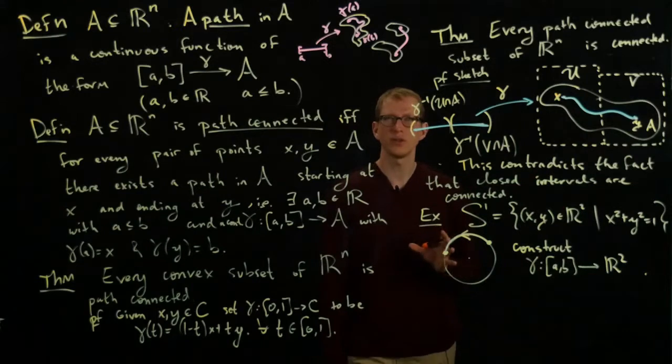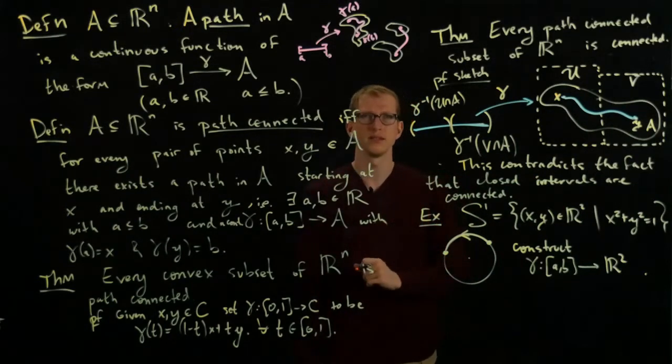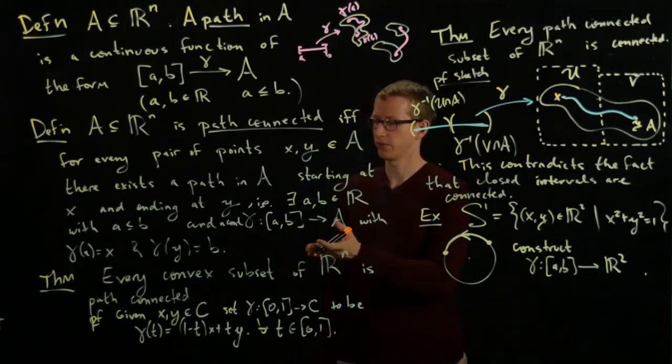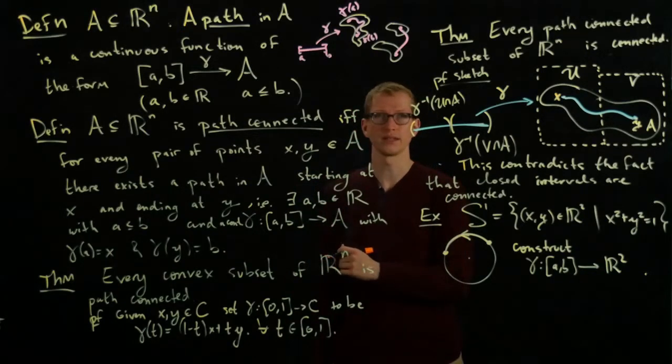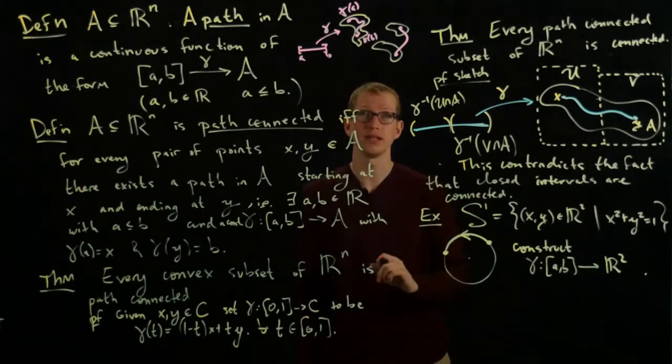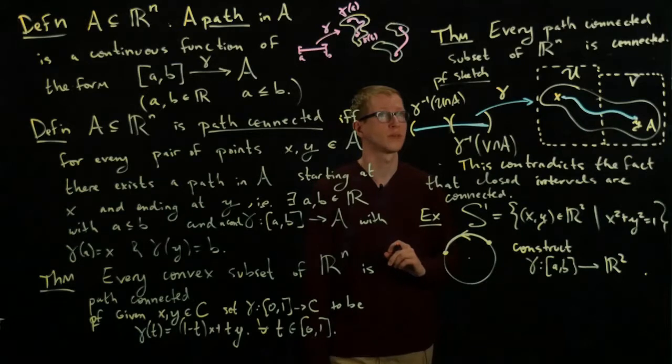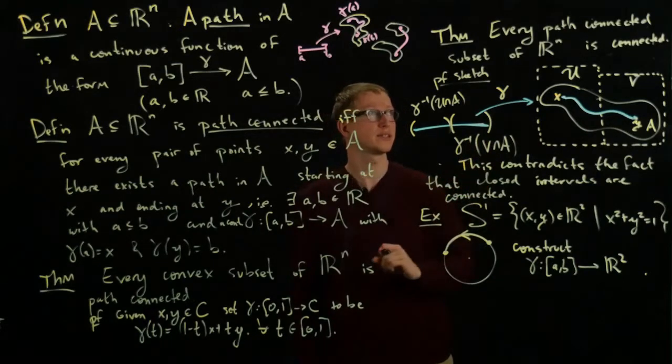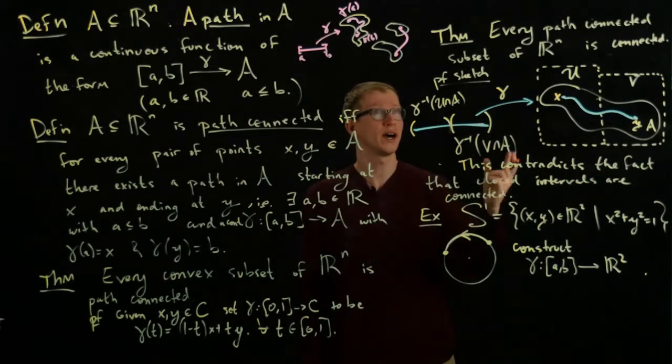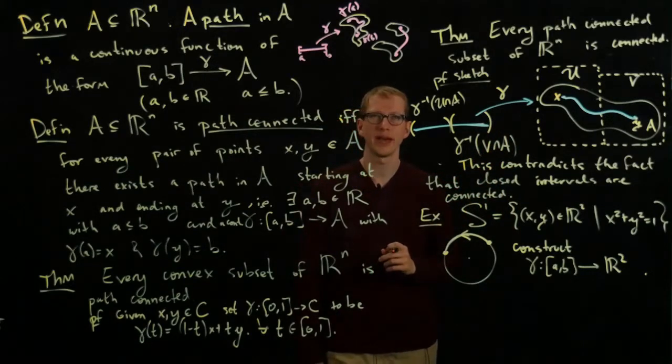So we have several notions of connectedness now: connected, convex, path-connected. And we know that every convex subset is path-connected. Here's an example of a subset that's path-connected but not convex, as we saw a couple of videos ago. Similarly, every path-connected is connected.